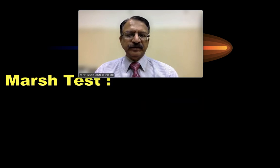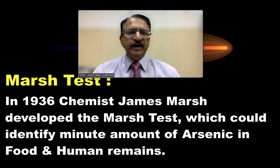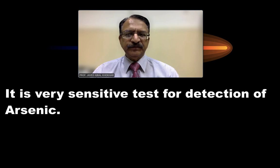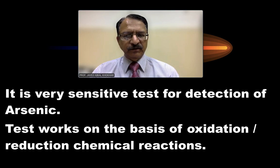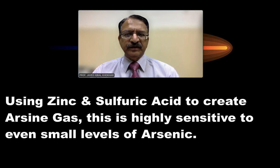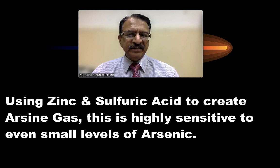The Marsh test was developed in 1836 by chemist James Marsh, and it can identify minute amounts of arsenic in food and human remains. It is a very sensitive test for the detection of arsenic, working on the basis of oxidation and reduction chemical reactions, using zinc and sulfuric acid to create arsenic gas — highly sensitive even to small levels of arsenic.